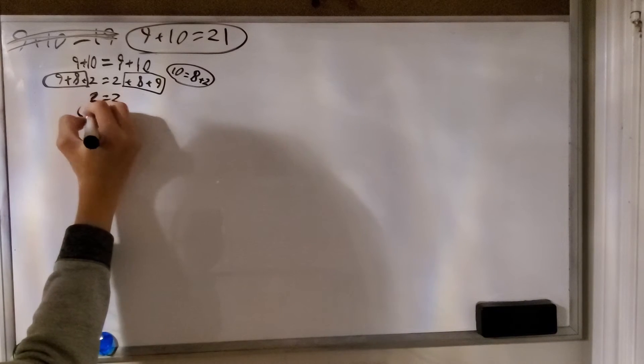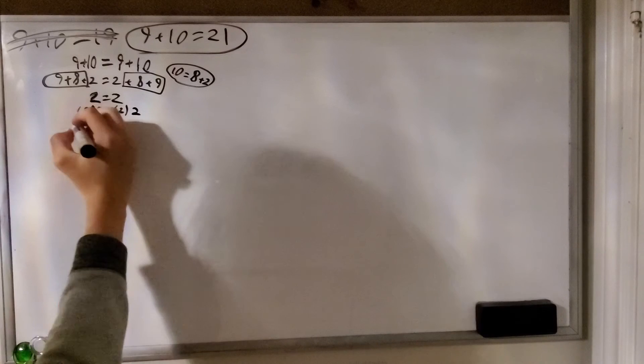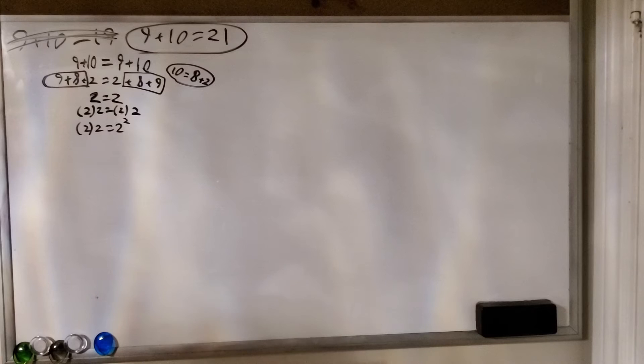Now let's also multiply both sides by 2. I think we can all agree 2 times 2 equals 2 times 2. And also remember, 2 times 2 is equal to 2 to the power of 2. Don't believe me? Check it on your calculator.